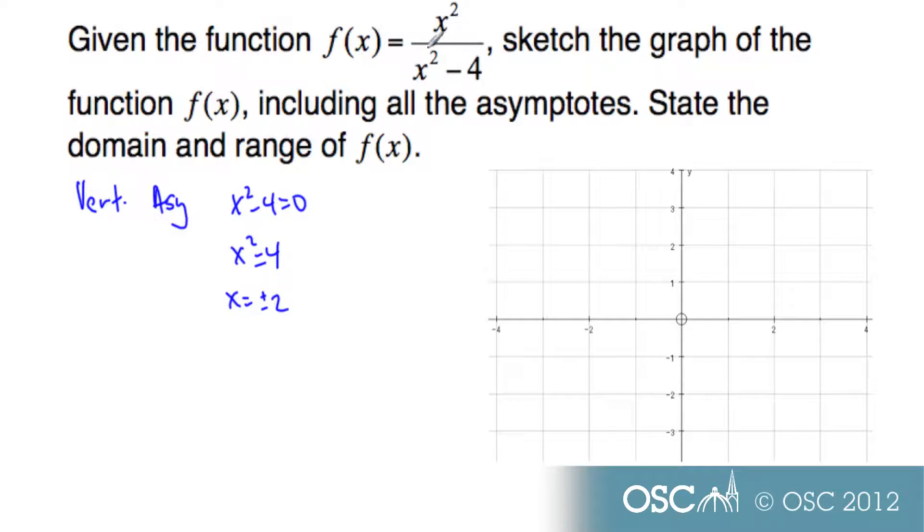This graph, this function is not allowed to have x be plus or minus 2. So that's a restriction on the domain. That means if it's not allowed to be it, that's going to be vertical asymptotes. Here's negative 2, and here's positive 2.